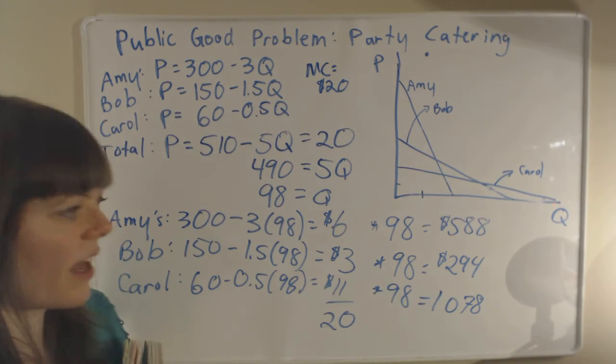So that's basically how you do an algebraic version of the public goods problem. Now, while I'm at it, I might as well graphically show you how to add these curves.